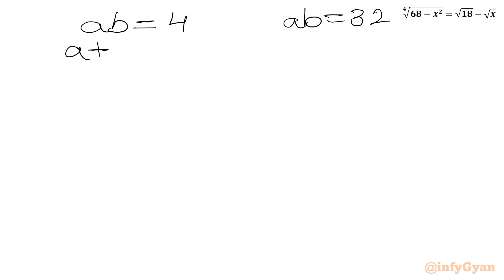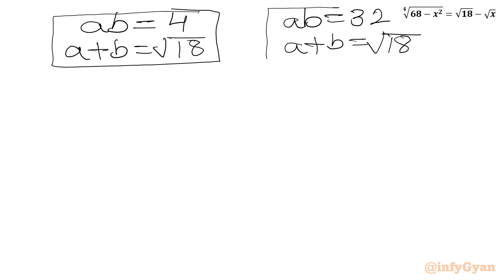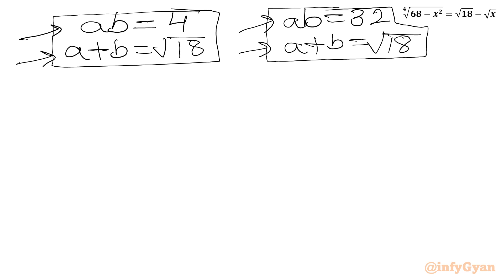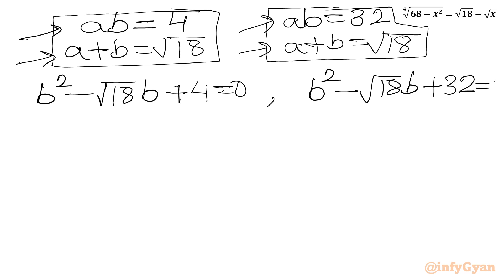Since m equals ab, we have ab equal to 4 or ab equal to 32. Combined with a plus b equal to square root of 18, we form two quadratic equations whose roots are a and b. The first quadratic: b² minus root(18)·b plus 4 equal to 0. The second quadratic: b² minus root(18)·b plus 32 equal to 0.